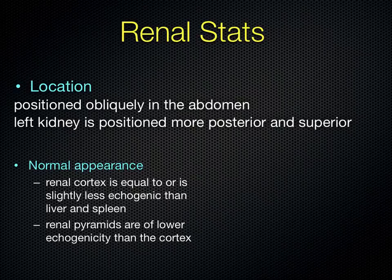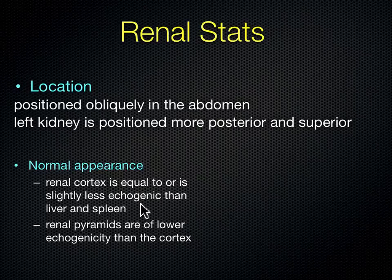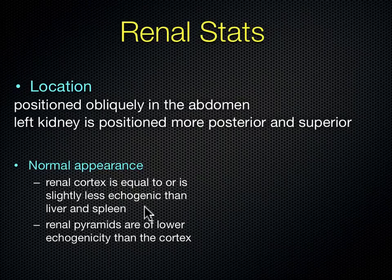The kidneys are located obliquely in the abdomen. The left kidney is more posterior and more superior — the way I remember that is the left kidney is more towards the head and more towards the bed. The renal cortex is less echogenic than the liver or the spleen. The renal pyramids, because they're filled with urine, are less echogenic than the cortex. So in terms of brightness: the liver and spleen are brighter than the kidney's cortex, and the kidney's cortex is brighter than the renal pyramids.